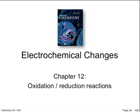Electrochemical Changes, Chapter 12: Oxidation-Reduction Reactions. Up to this point, high school chemistry students have perhaps assumed that if a chemical equation can be written, then the reaction must occur. In this chapter, we will learn how to predict whether a reaction will indeed spontaneously proceed to products.